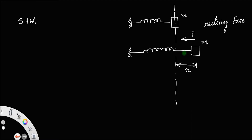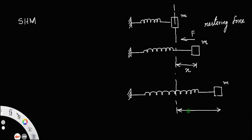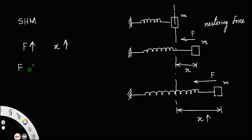Now, this mass will oscillate about the mean position, and this force will bring the mass back to the mean position. What will happen if you displace this mass more? If you increase the displacement, the restoring force also increases — the more you stretch, the more will be the force. If you extend the spring to a great extension, it will bring the mass quickly to the mean position. So clearly, if you increase the displacement, the force is also increasing, which means force is directly proportional to displacement.